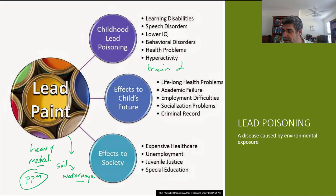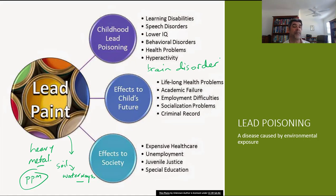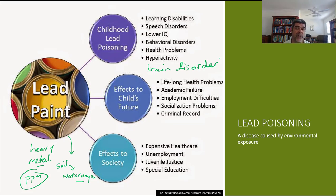A small list of consequences associated with higher-than-safe levels of lead exposure in childhood includes learning disabilities, speech disorders, lower IQs, behavioural disorders, health problems, and hyperactivity. There can also be significant social and potentially legal implications for young people whose brains do not develop under a normal pattern.